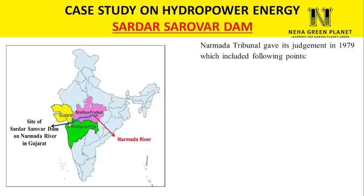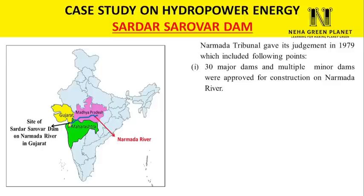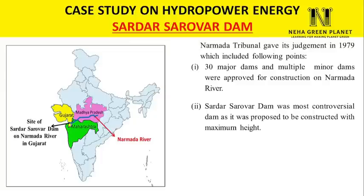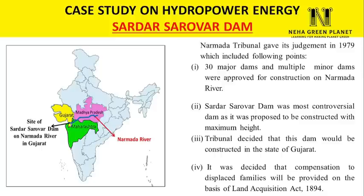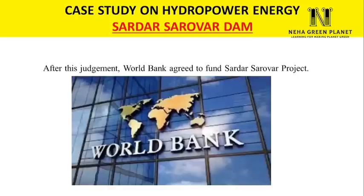The tribunal approved 30 major dams and multiple minor dams along the Narmada River. Sardar Sarovar Dam was approved to be constructed in Gujarat, as it is close to drought-prone Rajasthan (enabling easier water transfer) and near industrial groups (enabling easier electricity distribution). It was acknowledged that tribal and local people living on the banks of the Narmada would be displaced, and the tribunal decided that compensation would be provided under the Land Acquisition Act 1894. World Bank subsequently agreed to fund the Sardar Sarovar Dam project.